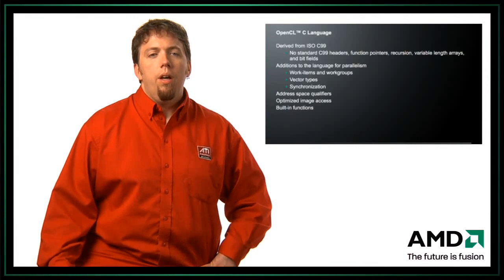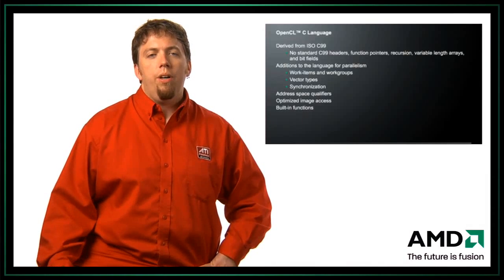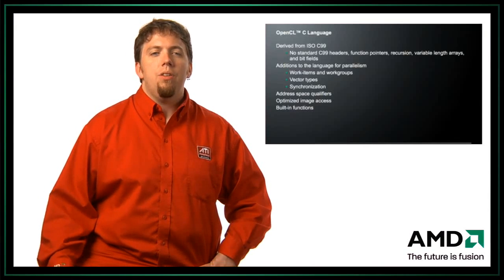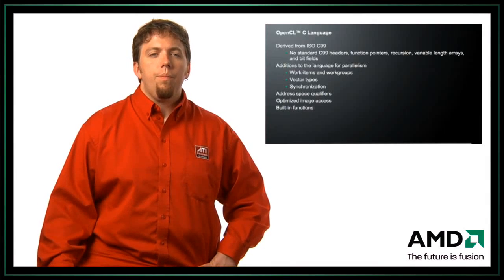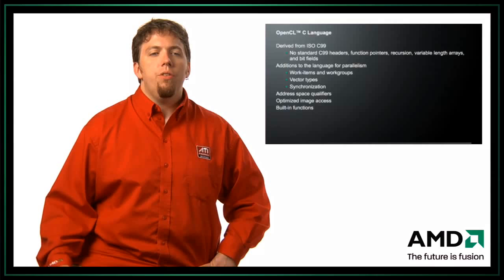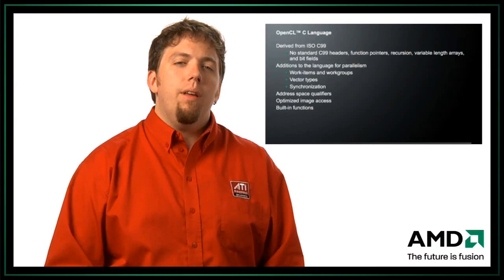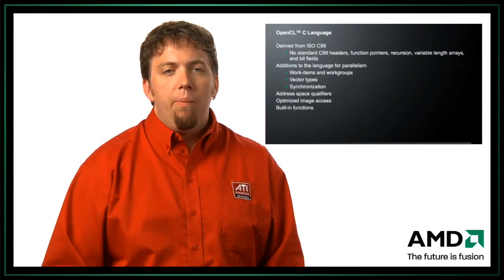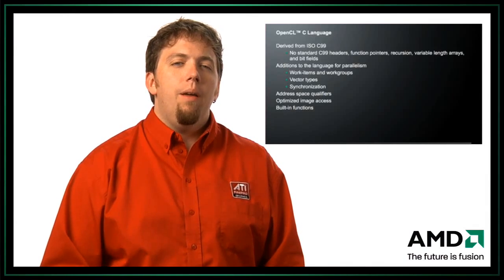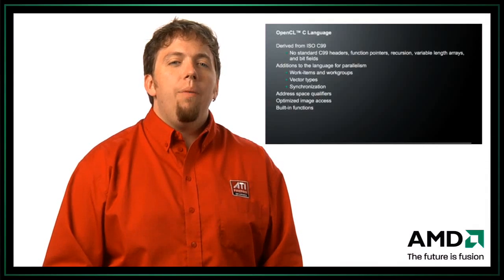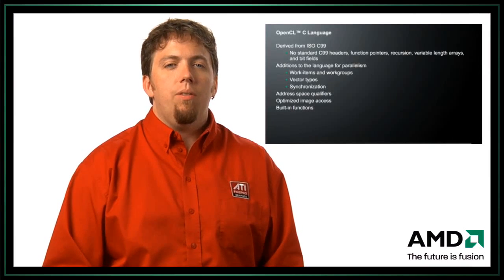There are also additions to OpenCL C made to help out with parallelism. There are work item functions and work group functions used when writing your application so you know what work item you are and what work group you're in. Those are built-in intrinsics in the language. There are also explicit vector types, functions for handling synchronization, address space qualifiers, and optimized image access for hardware with special purpose image units.